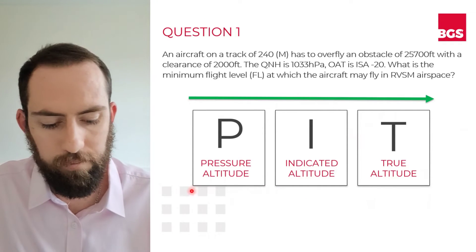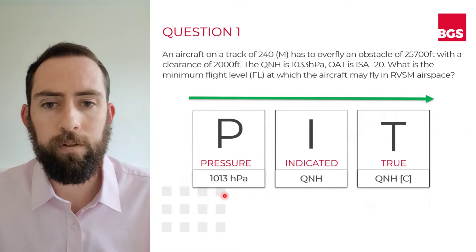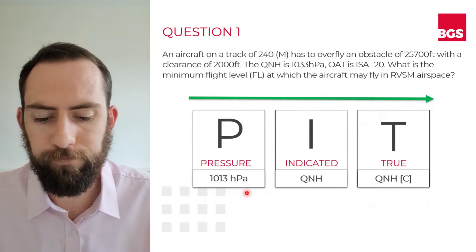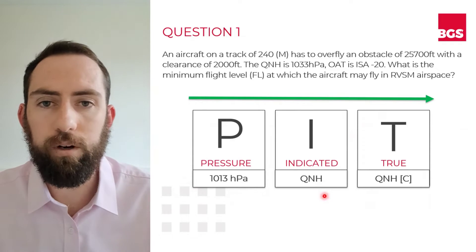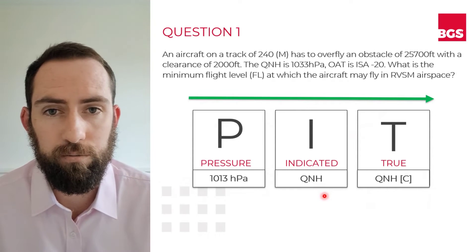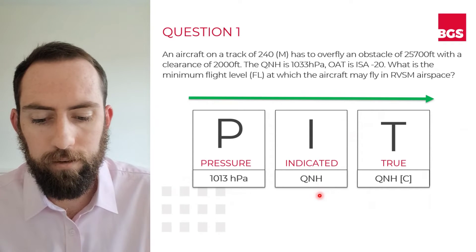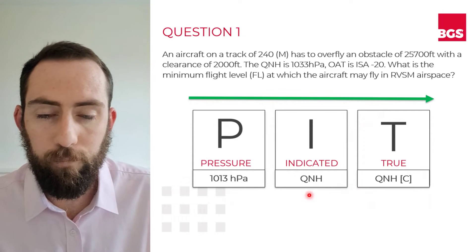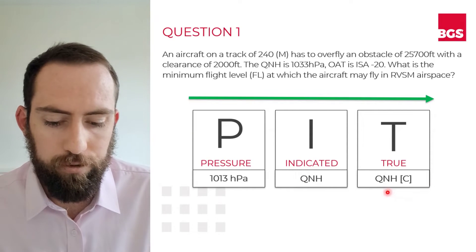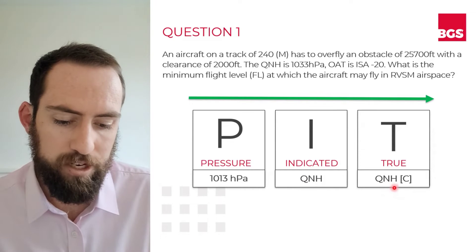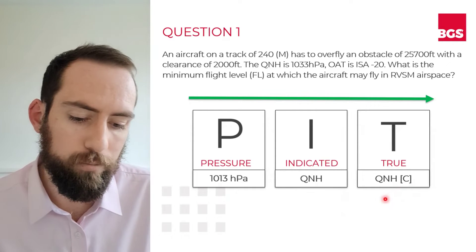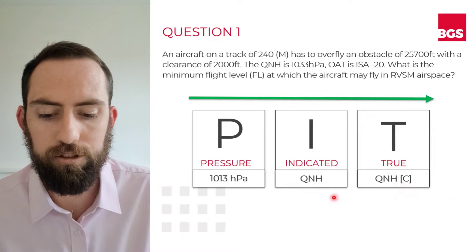What do these three different terms mean? Your pressure altitude is what's going to be reflected on your altimeter if you set 1013 into your altimeter subscale. Your indicated altitude, on the other hand, is your altitude above mean sea level, which is useful to know since all of the obstacles around you are also going to be compared to mean sea level. You get your indicated altitude from whatever your altimeter tells you if you set the local QNH into your altimeter subscale. Your true altitude is also based on your QNH, but with a correction that's necessary because there is usually a discrepancy between your true altitude and your indicated altitude.